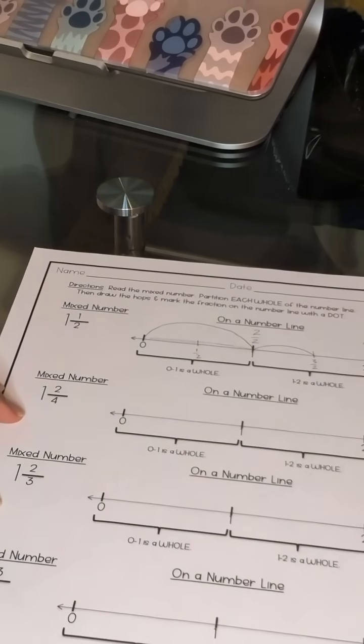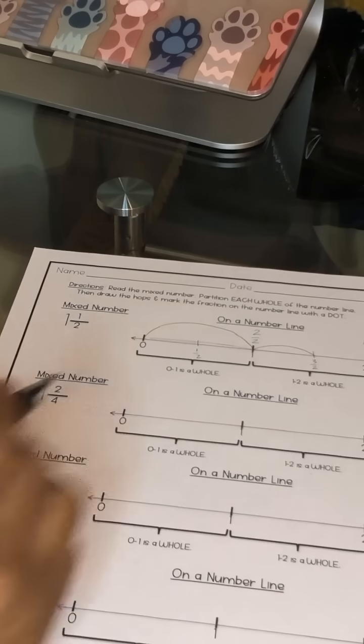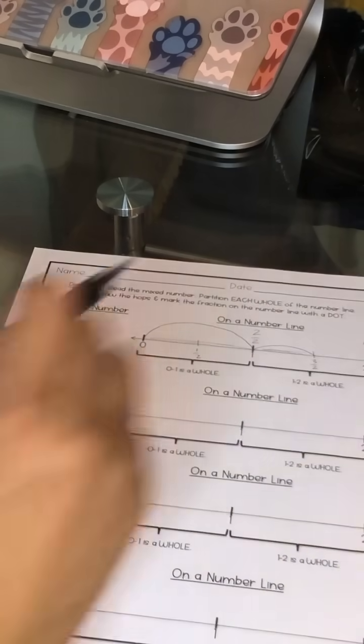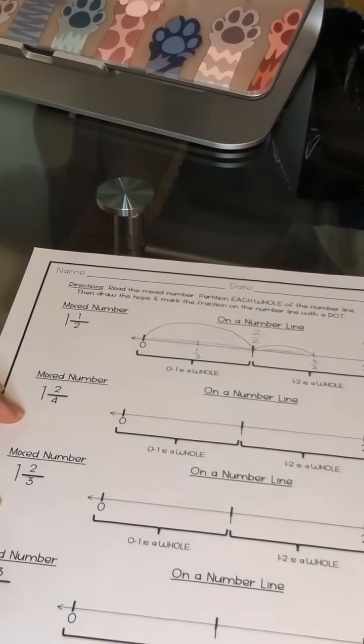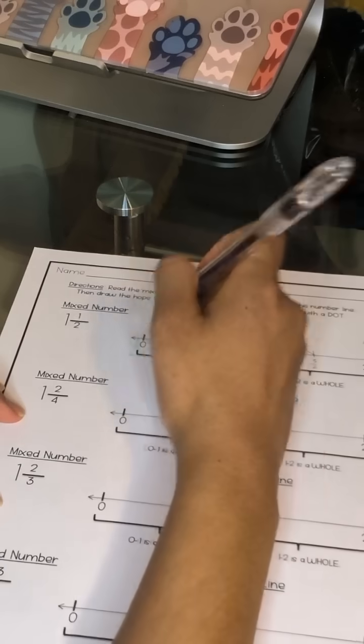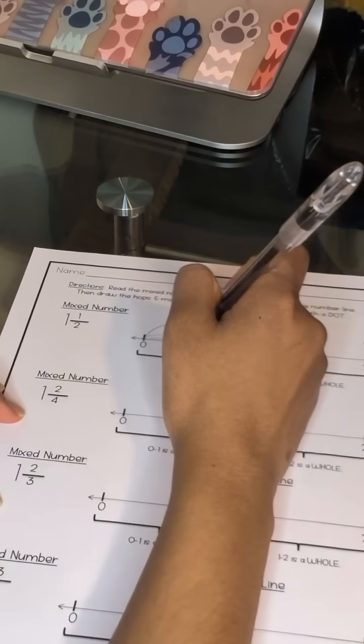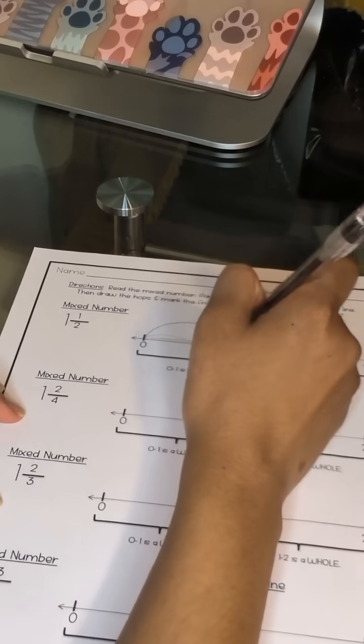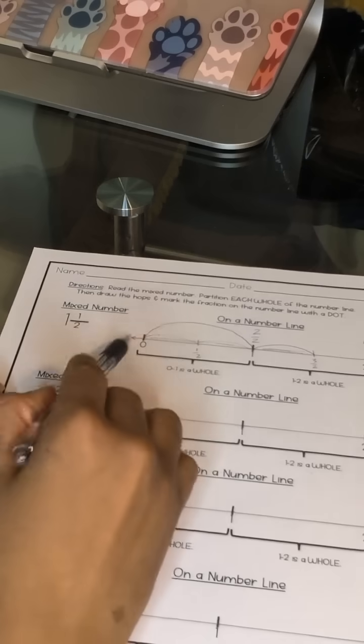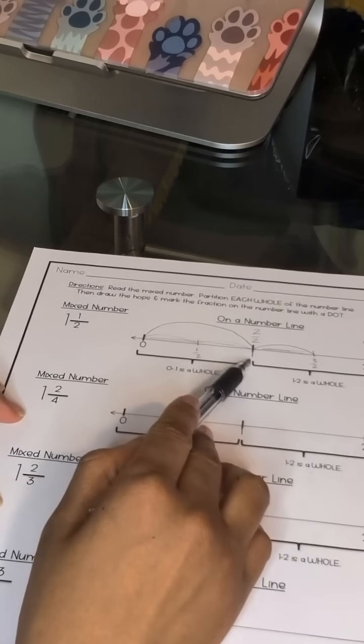Why would we show it that way? Well, if we were to break our jump into a smaller jump, our first one, we would have one small jump and a second jump, which is why we have one large jump for our one whole.